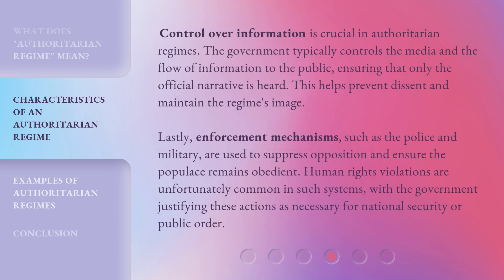Control over information is crucial in authoritarian regimes. The government typically controls the media and the flow of information to the public, ensuring that only the official narrative is heard. This helps prevent dissent and maintain the regime's image. Lastly, enforcement mechanisms, such as the police and military, are used to suppress opposition and ensure the populace remains obedient. Human rights violations are unfortunately common in such systems, with the government justifying these actions as necessary for national security or public order.